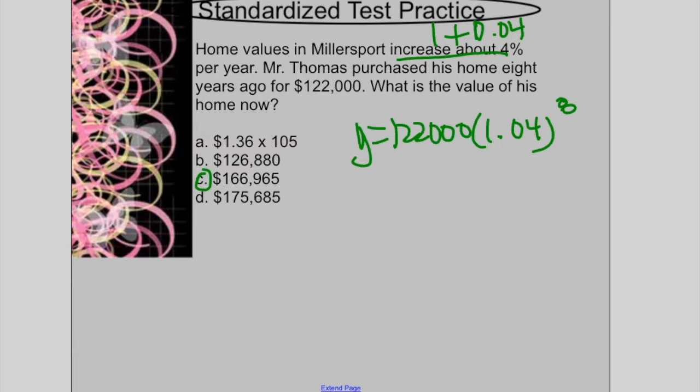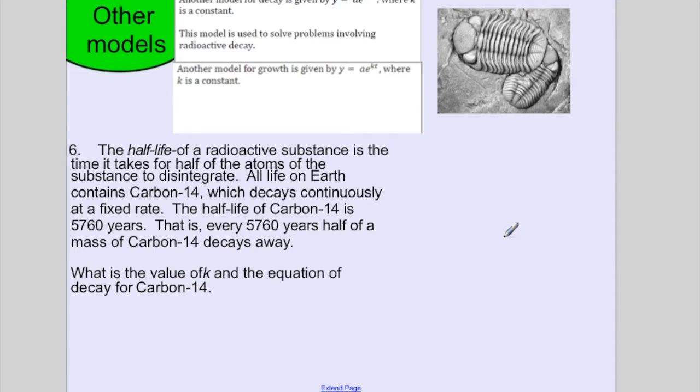We have some other models that are used. There's exponential decay: y equals a times e to the negative kt, where k is a constant. So typically your rate that you are decreasing at. This is a model that they use for radioactive decay. This one is for growth. So notice decay has a negative, growth has a positive. When it is involving e, you use the actual rate you are given.